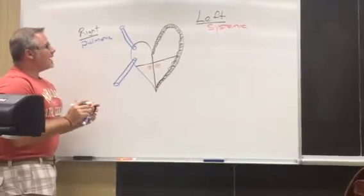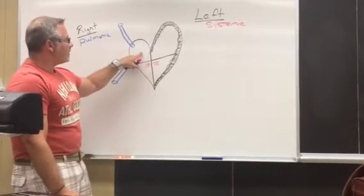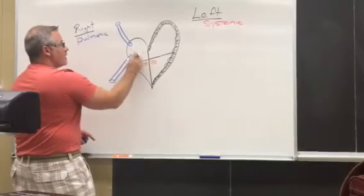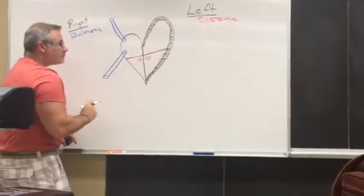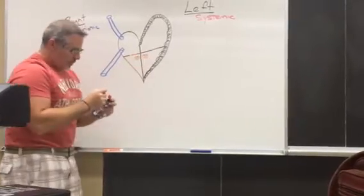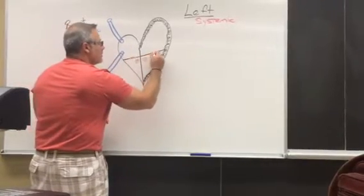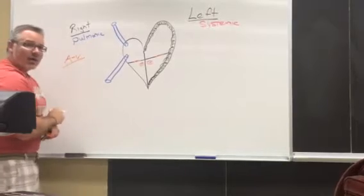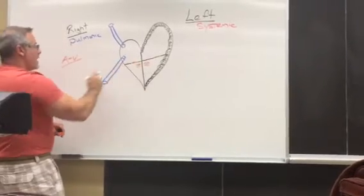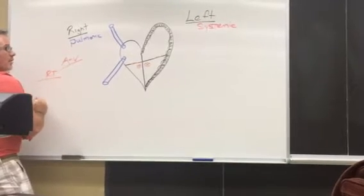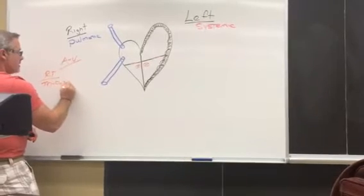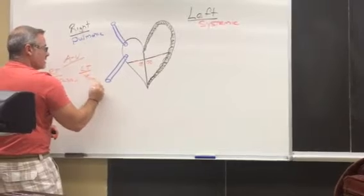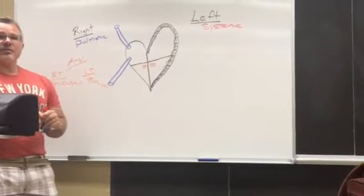Let's look at how blood flows. We start with the right atrium. We have four chambers: two atriums and two ventricles — right atrium, right ventricle, left atrium, and left ventricle. There are also four valves. The valves between the atriums and the ventricles are called the AV valves. The one on the right side is called the tricuspid valve.